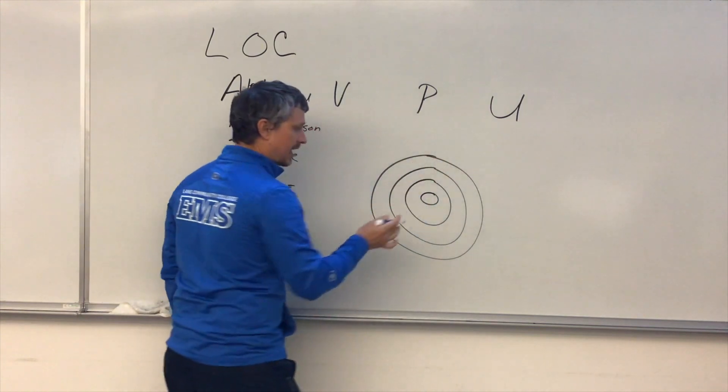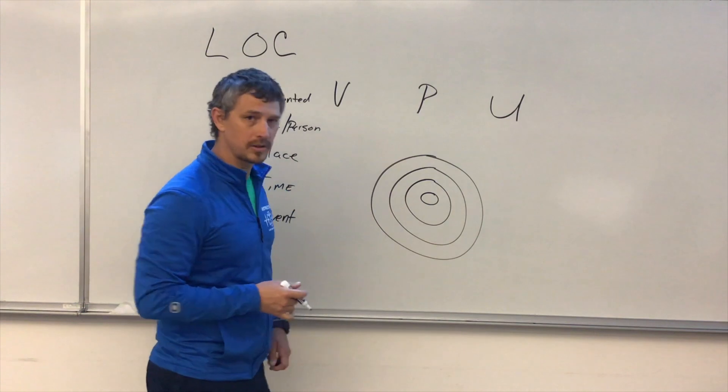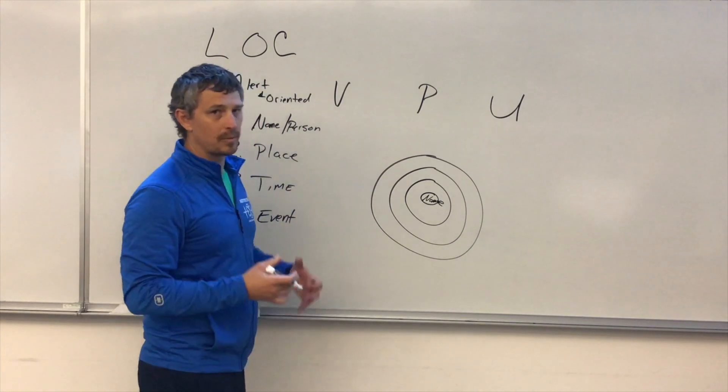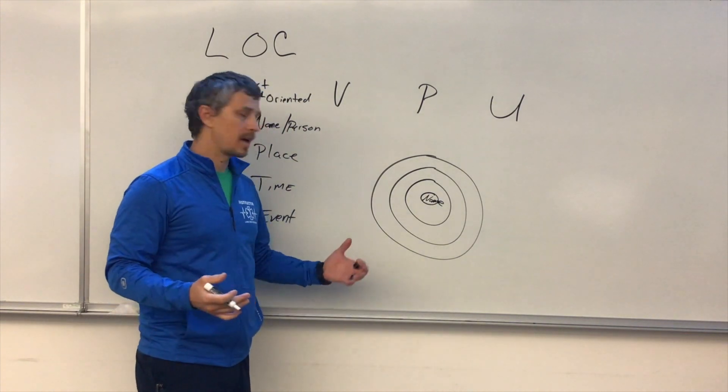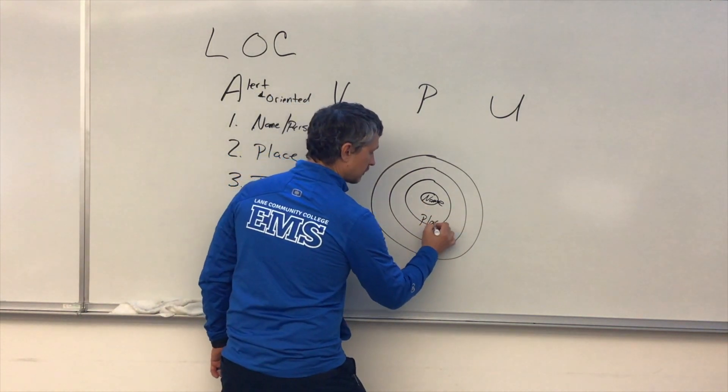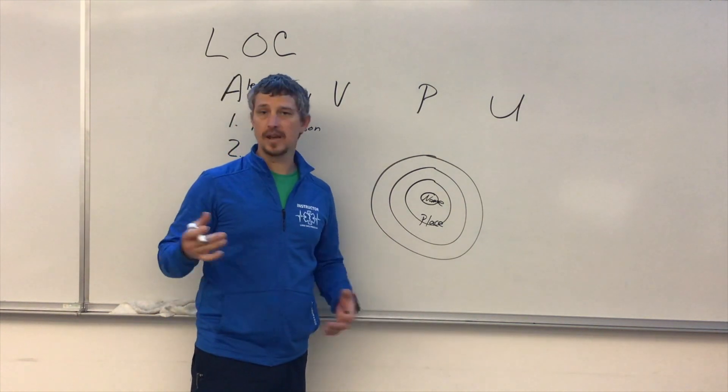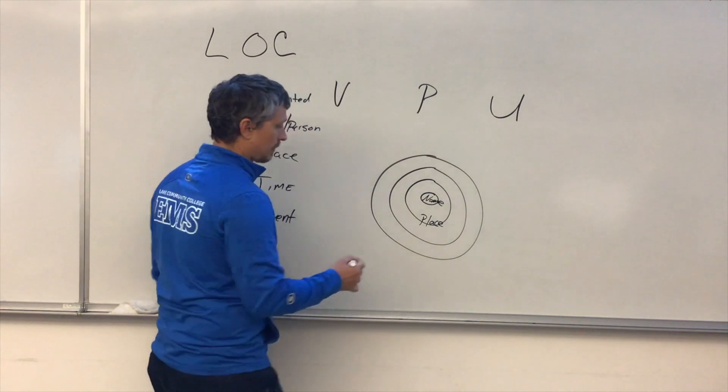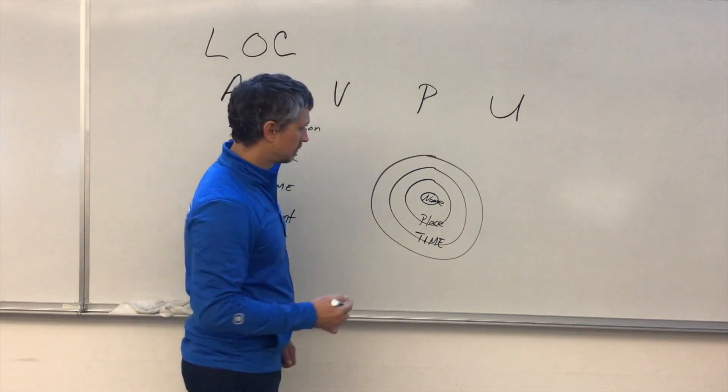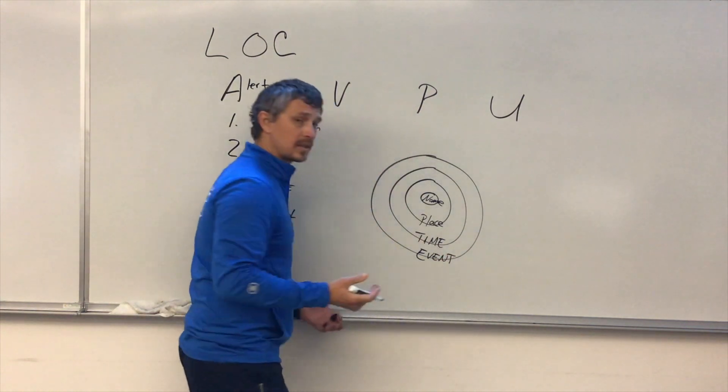So in these layers we have our short-term memory and our long-term memory. In our long-term memory we have our name—we've known our name for as long as we can remember. And then our place, usually we've been at a place for an extended period of time, for a day, two days, for an extended period of time.